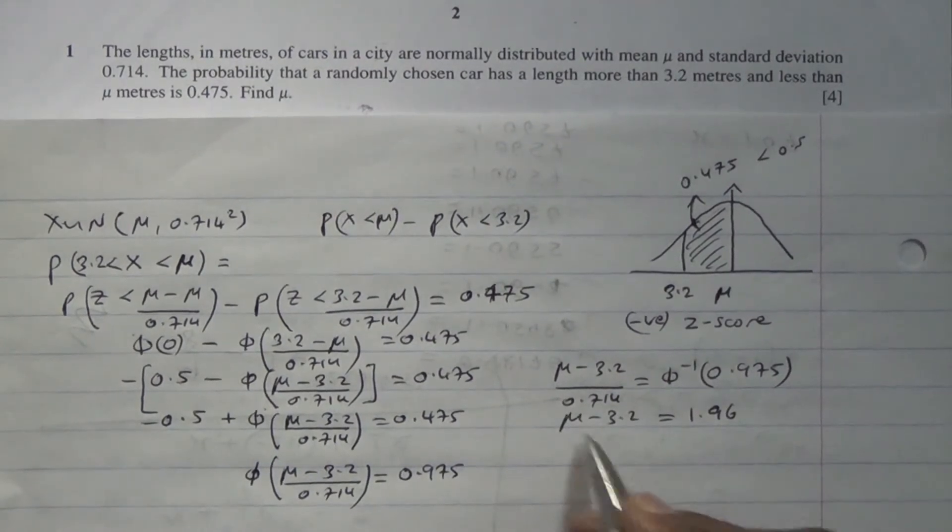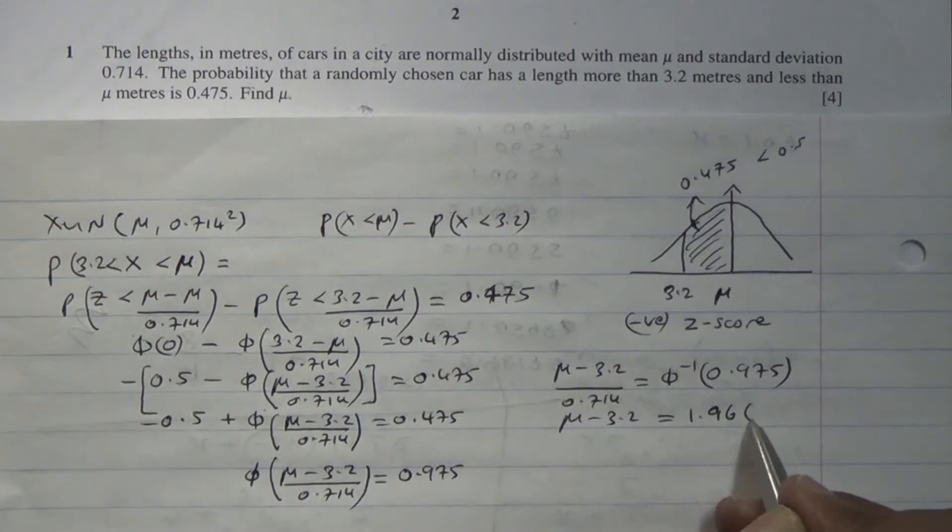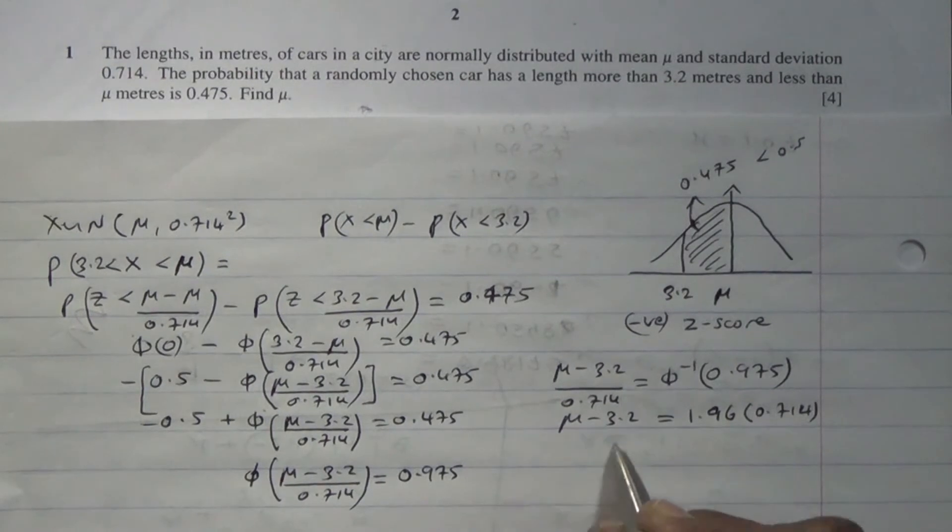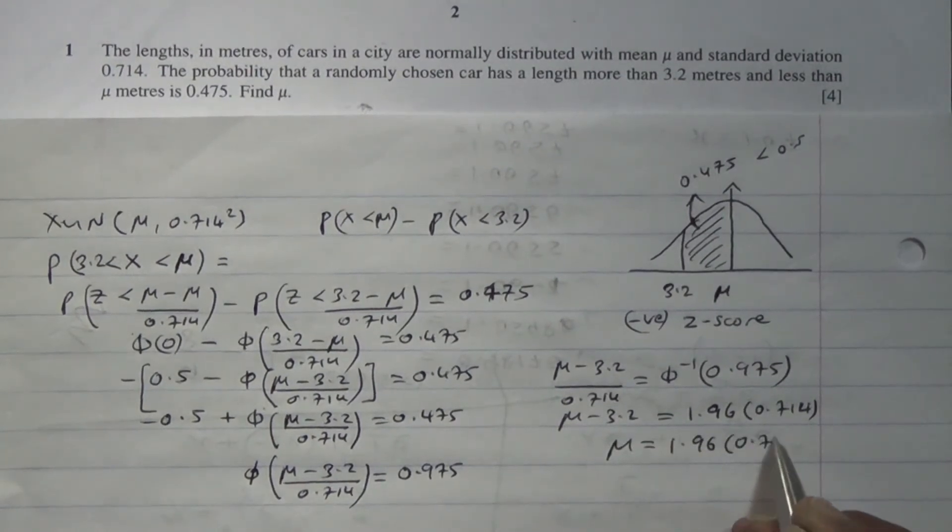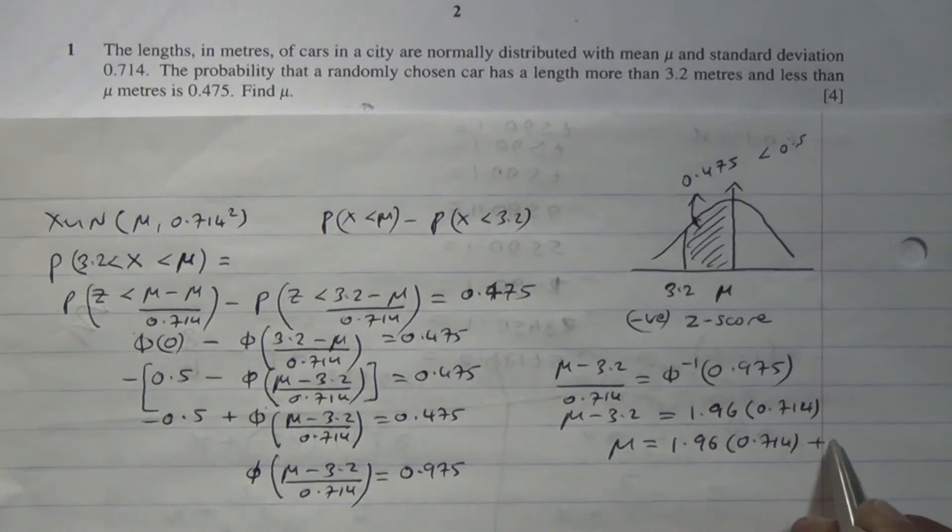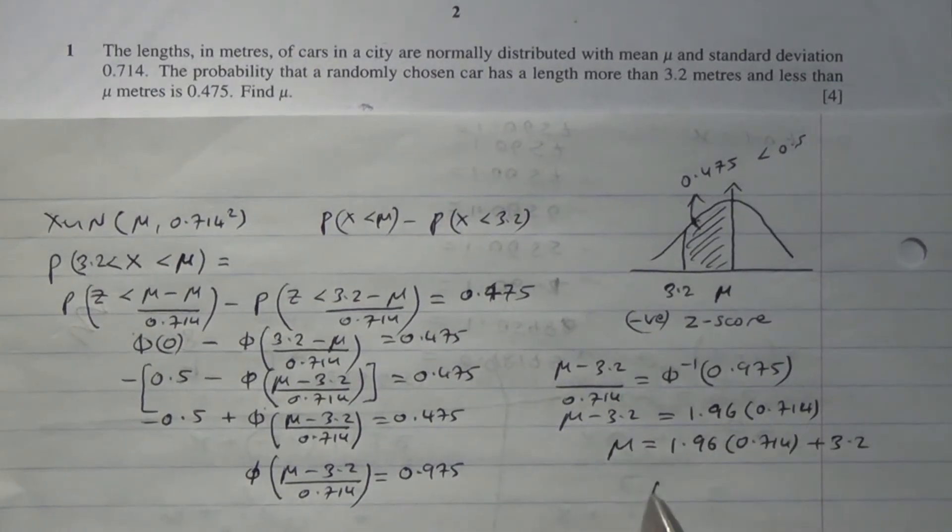And of course, mu minus 3.2 is on this side. This goes on the other side becomes multiplied. And therefore, mean mu is going to be 1.96 times 0.714 plus 3.2.